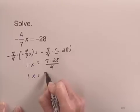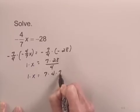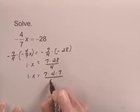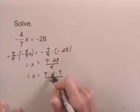I can simplify 7 times 28 over 4 because 28 has a factor of 4. 28 is 4 times 7, and I'll write 4 times 1 here. I see that I have a factor of 4 in both the numerator and the denominator on the right-hand side, and I can cancel the 4s.